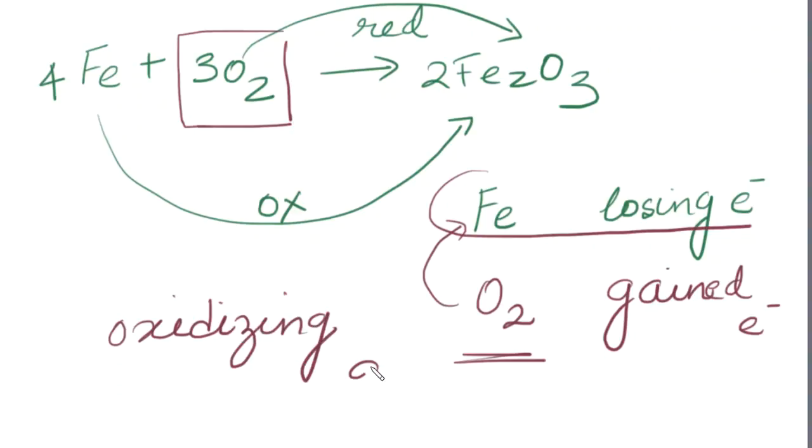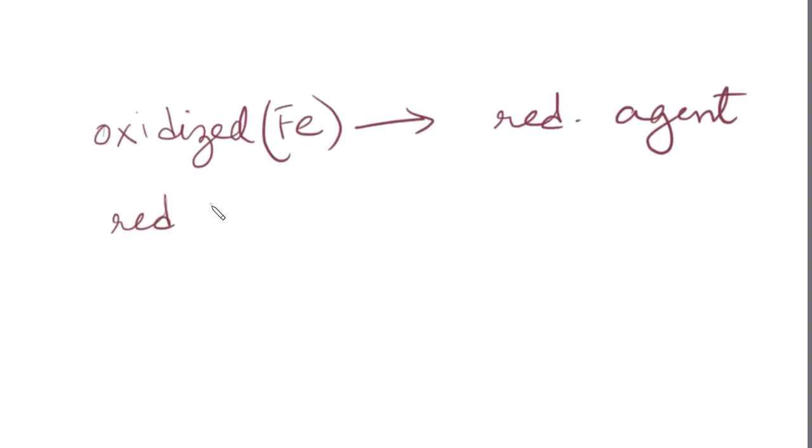Remember that oxygen itself is actually getting reduced but it is being an oxidizing agent. So a substance that is getting oxidized is a reducing agent. And a substance that is getting reduced, this guy is iron right here and this guy is oxygen, is an oxidizing agent.